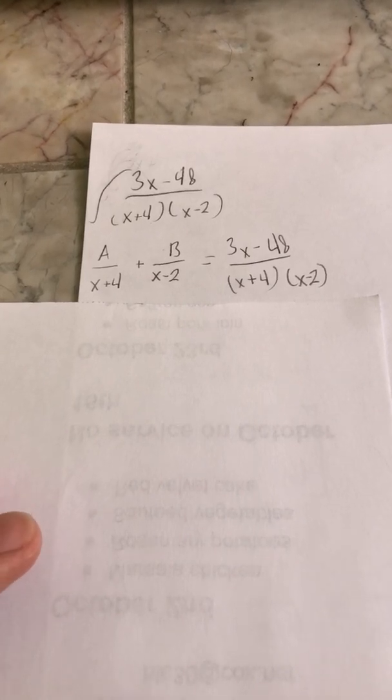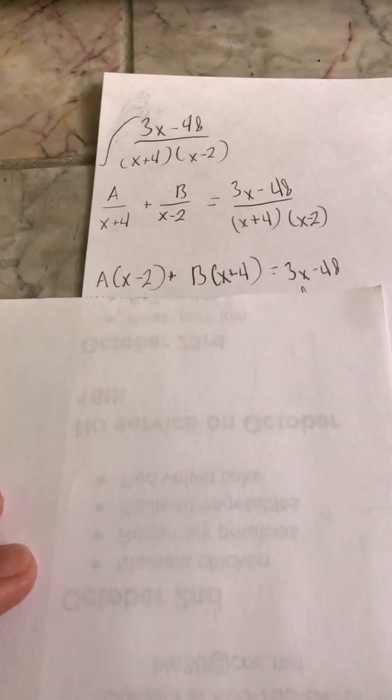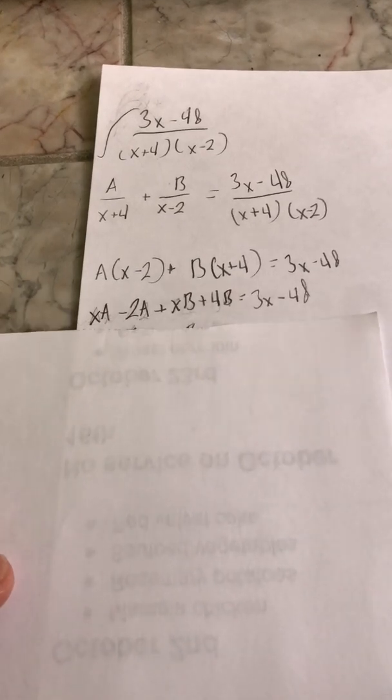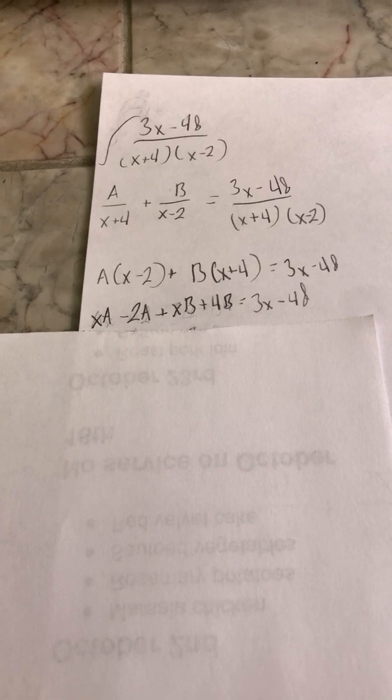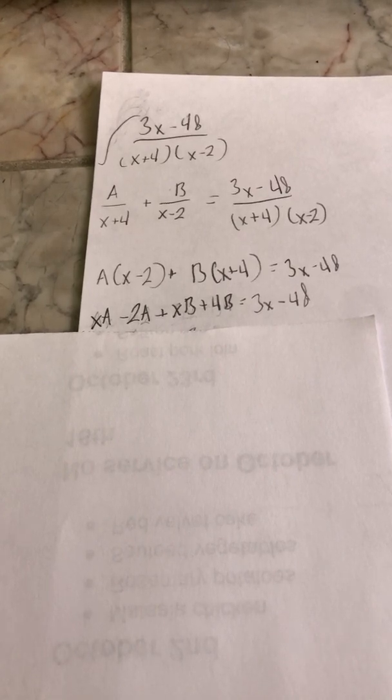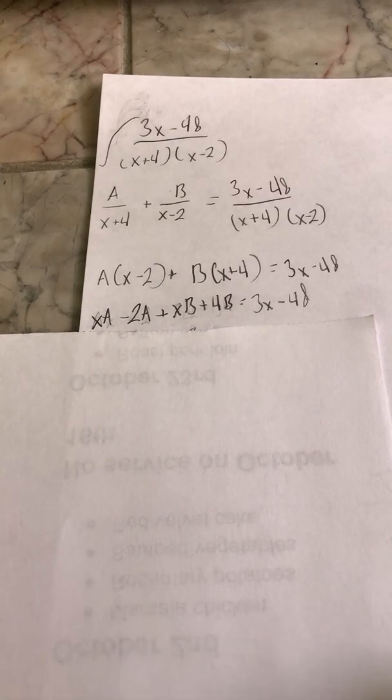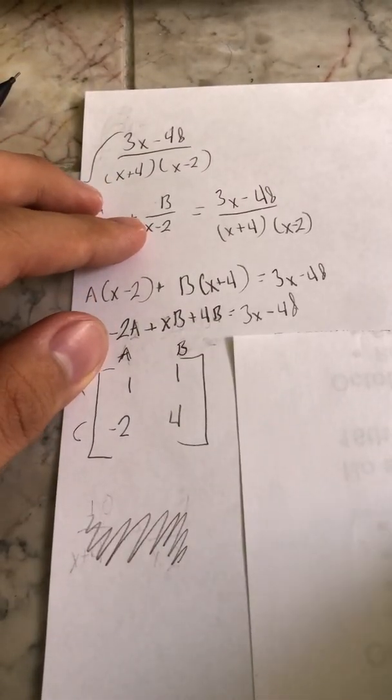First we're going to start with this problem. I'm going to approach it as how you would usually — separating it into two fractions, our A fraction and our B fraction. The next step is to multiply everything by the denominator, and once you multiply it all out you get x times A minus 2A plus x times B plus 4B equals 3x minus 48. Now this is where we start making our matrix.